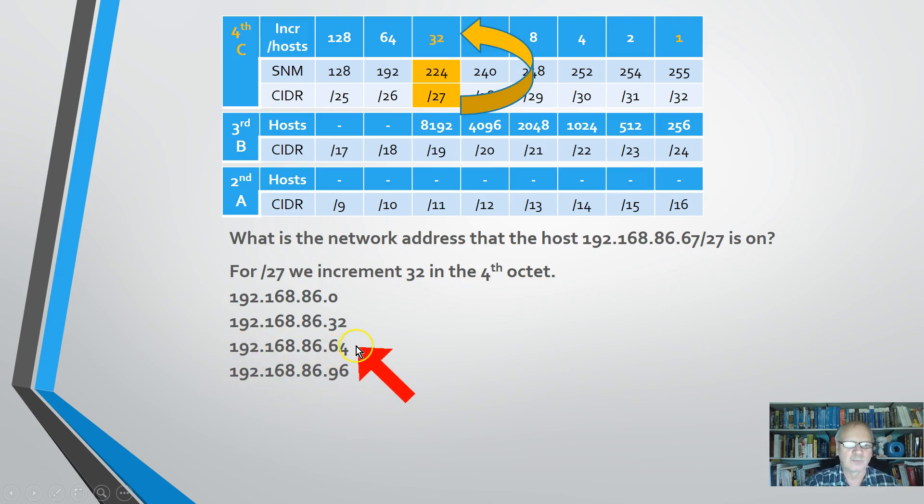We know, by the way, already, that the first usable host address would be .65. The broadcast address would be .95. Right, this one minus one. The last usable host address would be .94, one before the broadcast address.